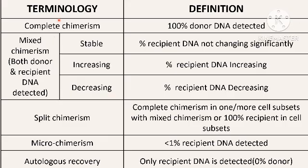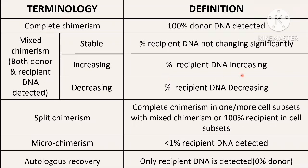We need to be aware of the terminology used in reporting chimerism. Complete chimerism means 100% donor DNA is detected and 0% recipient DNA. Mixed chimerism means both donor and recipient DNA is detected, and mixed chimerism can be stable, increasing, or decreasing. Stable means the percentage of recipient DNA is not changing significantly compared to the previously tested time point. Increasing means the percentage recipient DNA is increasing, and decreasing means it is decreasing compared to the previously tested sample.